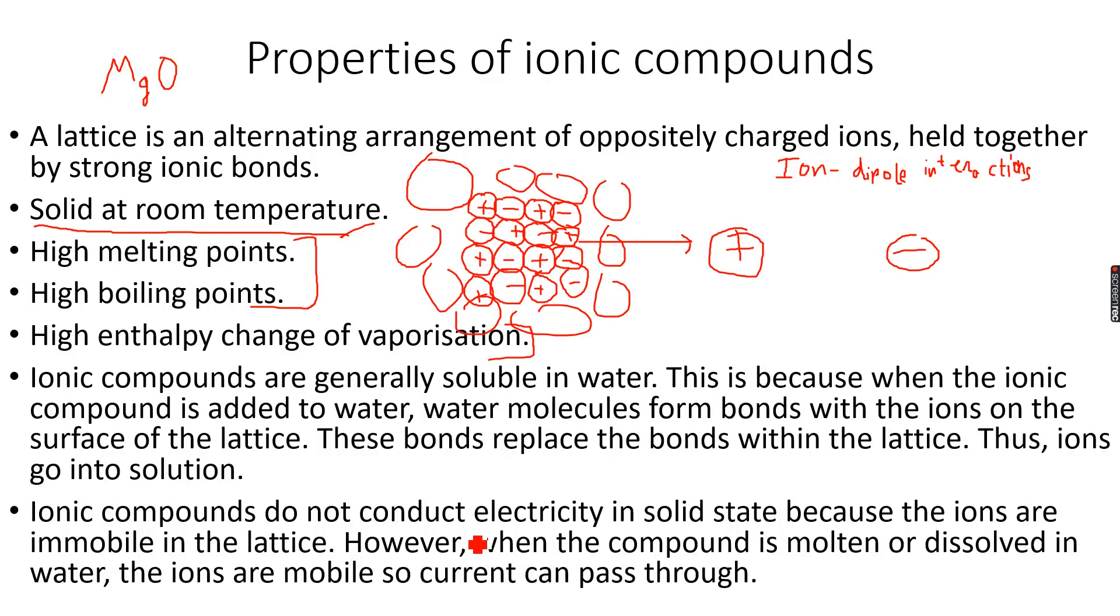The larger the charge on the ions, the stronger the bonds. This is why MgO has a higher melting point than NaCl.